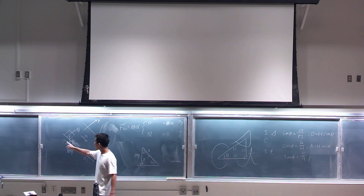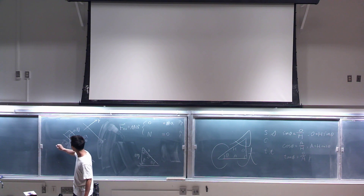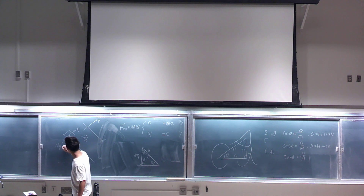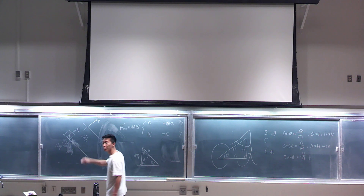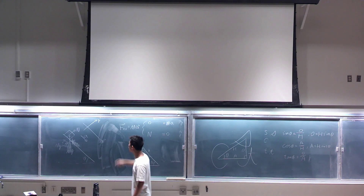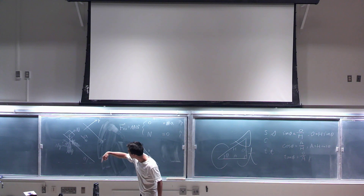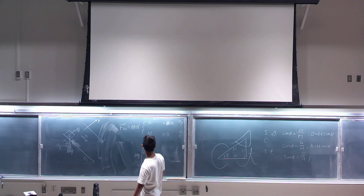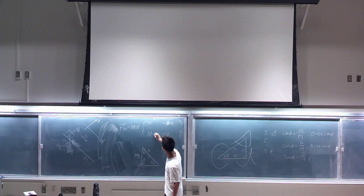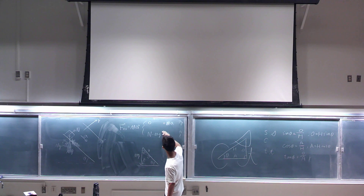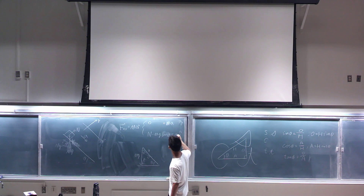We know that this is cosine, so the y-component of gravity in this coordinate system will be mg cosine going in negative y, so it becomes negative mg cosine for the y equation.